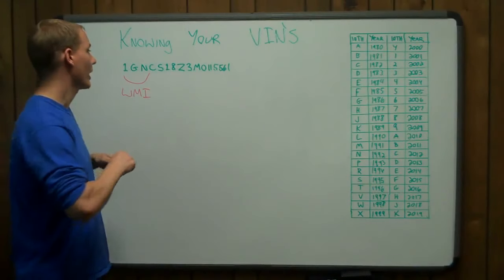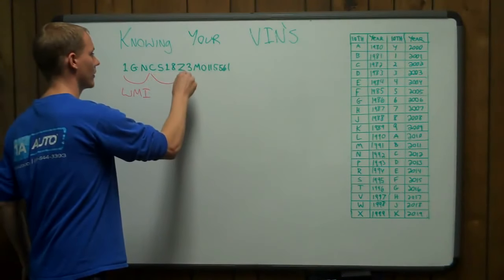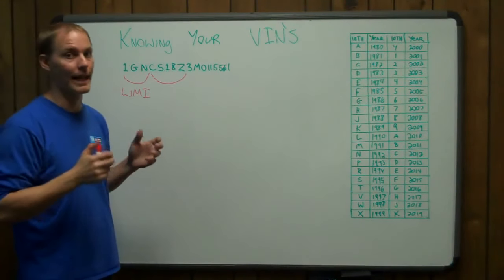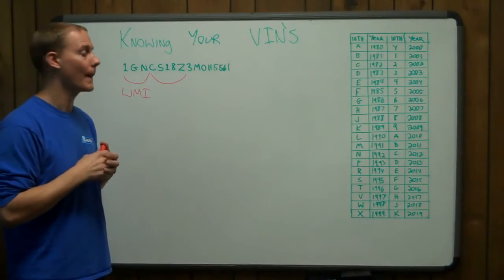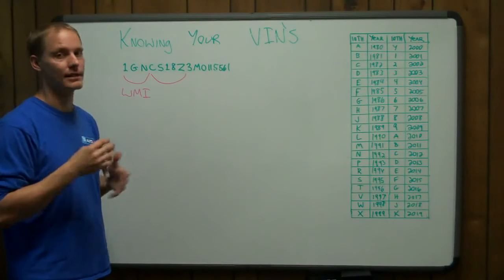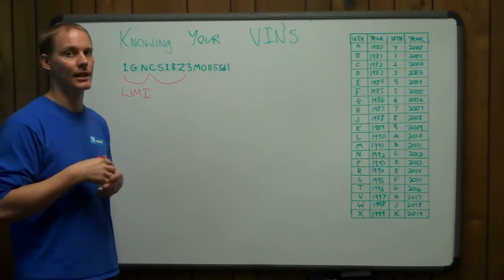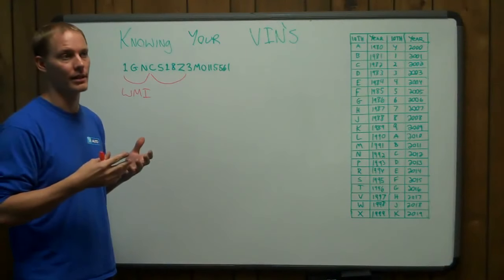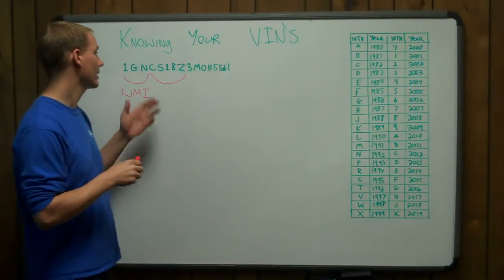The fourth through the eighth, right here, is called the attributes of the VIN. And those include things like safety, engine sizes, which series the vehicle is.